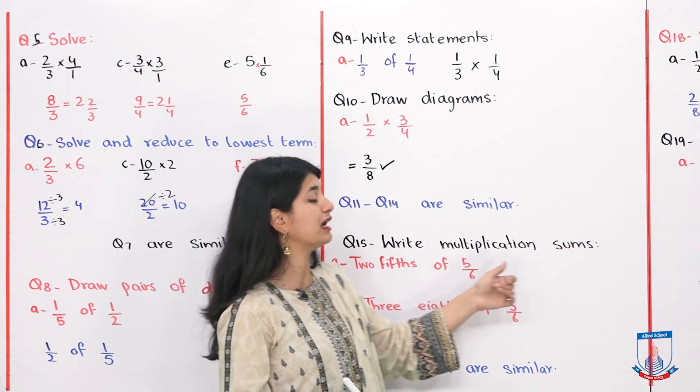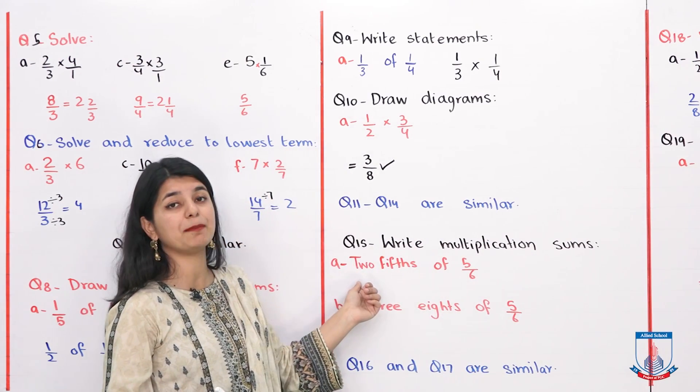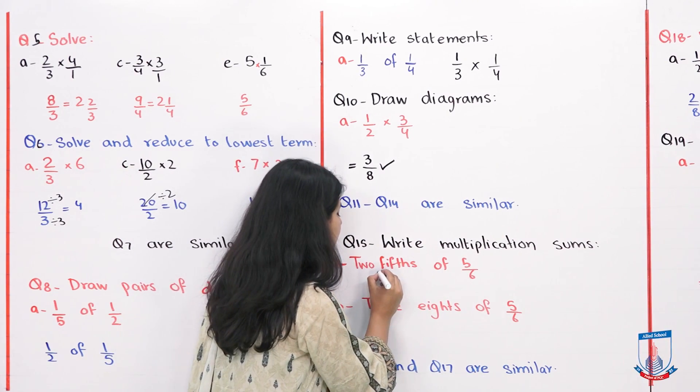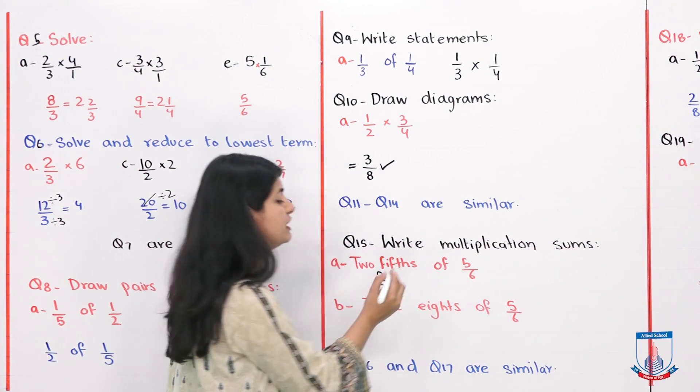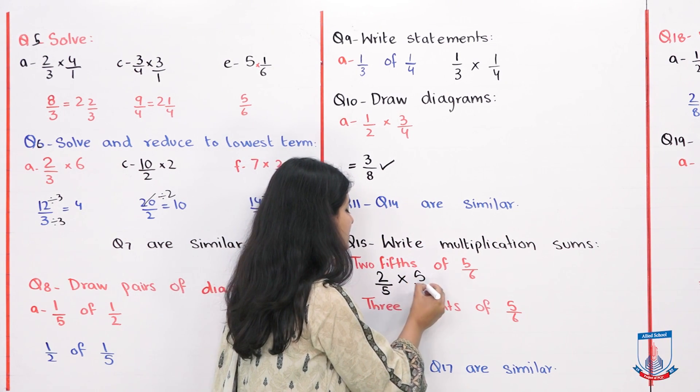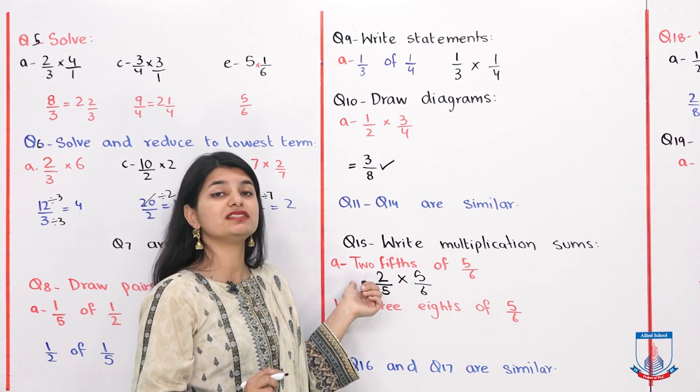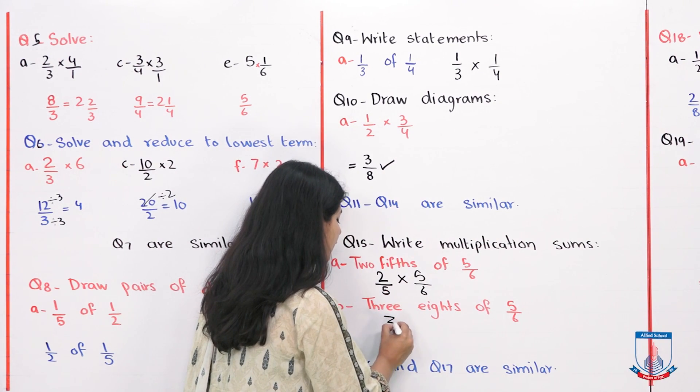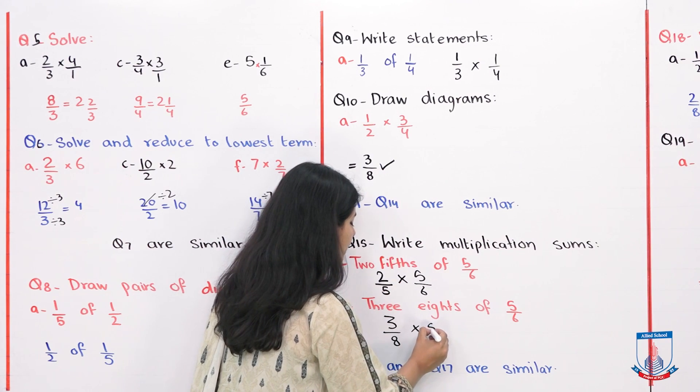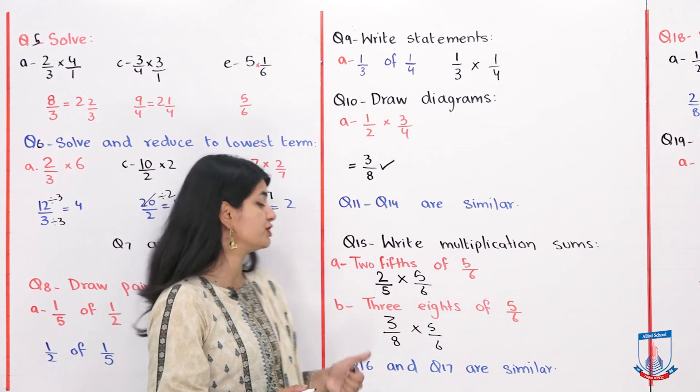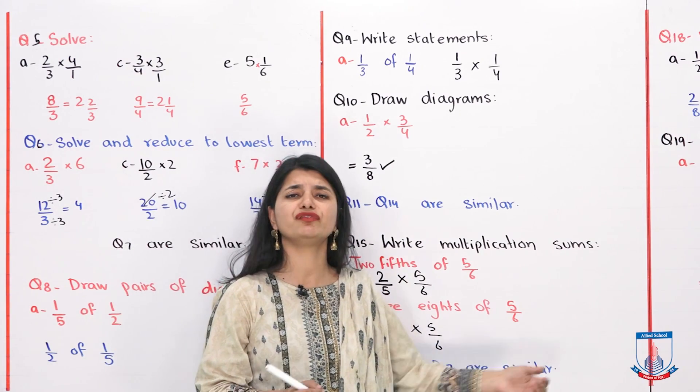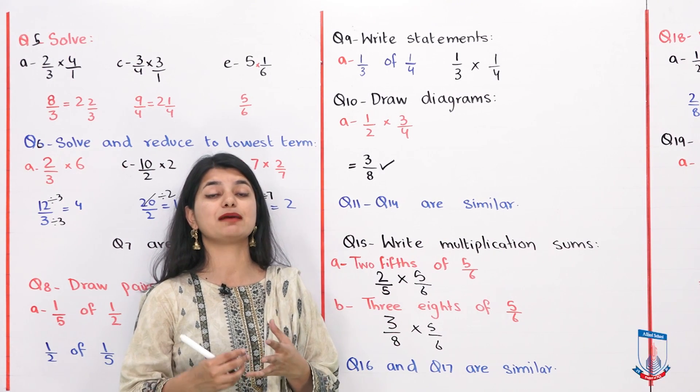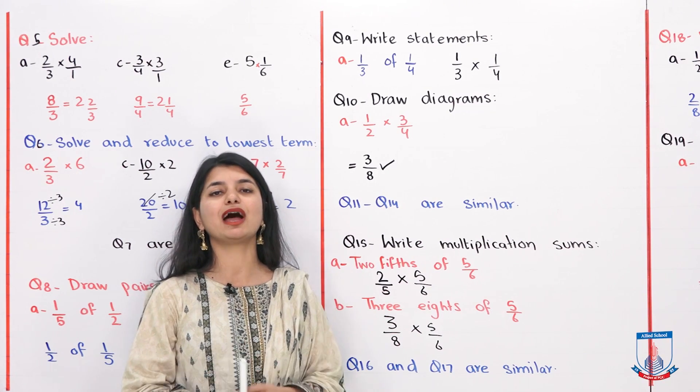Question number 15 is write multiplication sums. They have given you statements. You have to make them multiplication sums. 2 fifth of 5 by 6. It is not any problem. 2 fifth of 5 by 6. Off of the place, we have multiplication 5 by 6. Solve you did not have to do it. Only you have to write the sums of multiplication. 3 eighth of 5 by 6. Again, 3 by 8 into 5 by 6. So this is your question number 15. Question number 16 and 17 are also very similar. The multiplication is repetitive. We will do that on your own.